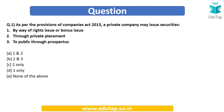Let's start with the first question. As per the provisions of the Companies Act 2013, a private company may issue securities by way of: (1) rights issue or bonus issue, (2) through private placement, (3) to public through prospectus. We are given different permutations and combinations — one and two, two and three, two only, one only, or none of the above. We have to find out by which means private companies can issue securities.